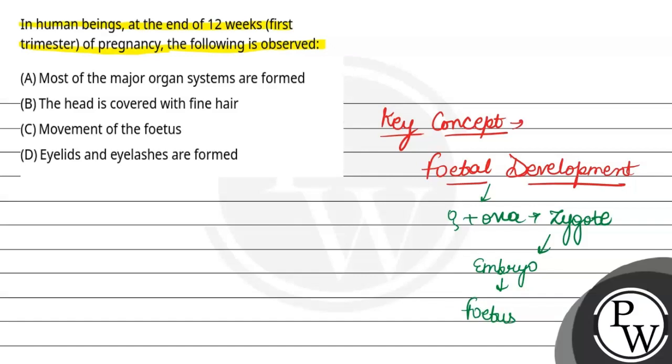In this question, what happens in the first trimester? Option first is, most of the major organ systems are formed. This is correct. Because around 12 weeks when pregnancy happens, most of the major organ systems are formed in fetus.